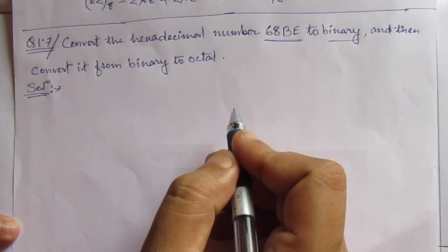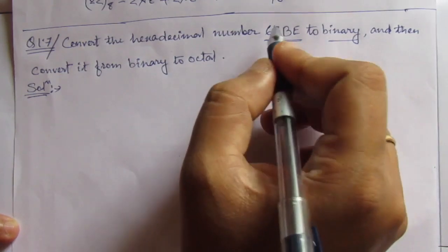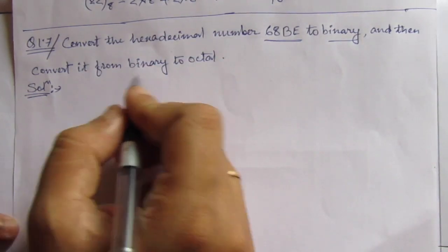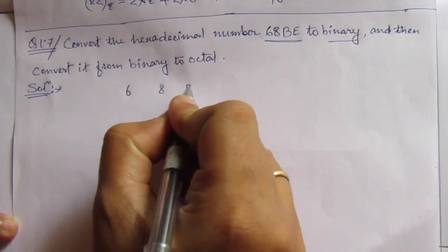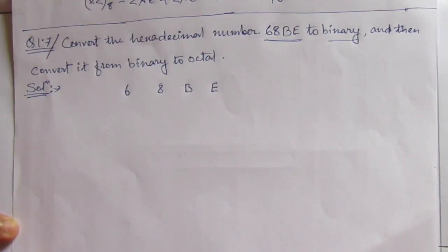Here, I will use a shortcut to solve this. So this is the hexadecimal number. You write it like this: 68BE. So this is the hexadecimal number.